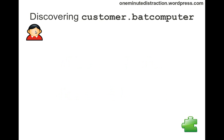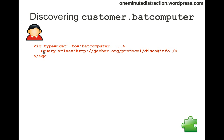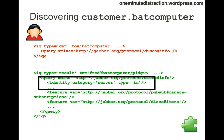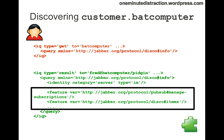Let's look at how this works through an example. We have a client and a server or component. When the client logs into an XMPP server, the client first sends an IQ message with a query as the child element. This query has a disco info namespace — essentially saying 'batcomputer, tell me about yourself.' When the server receives this message, it replies with two types of information: the identity of the server, and a list of all the features or services that the server hosts.